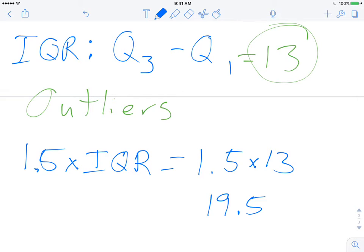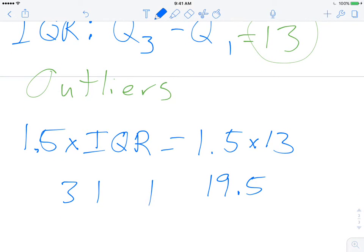So what do I do with that? Well, what I do is I take my median, which is 32. Take that back. My median was 31, and I add 19.5 to get an upper outlier boundary. So that's going to be 50.5.